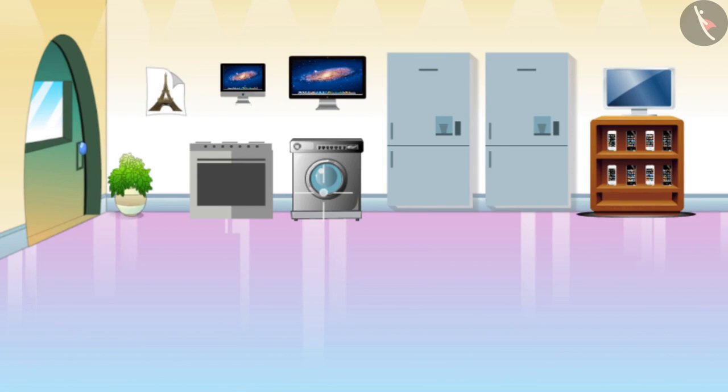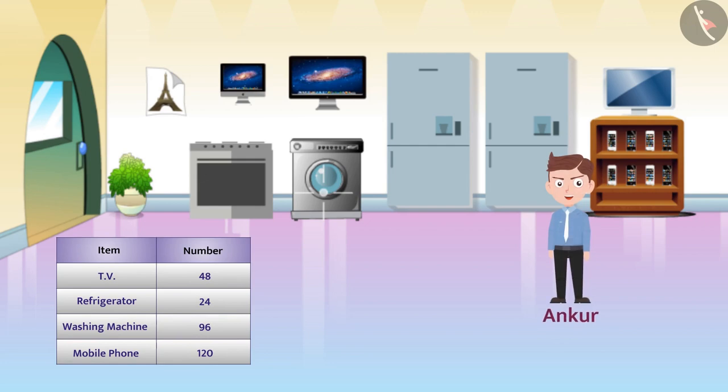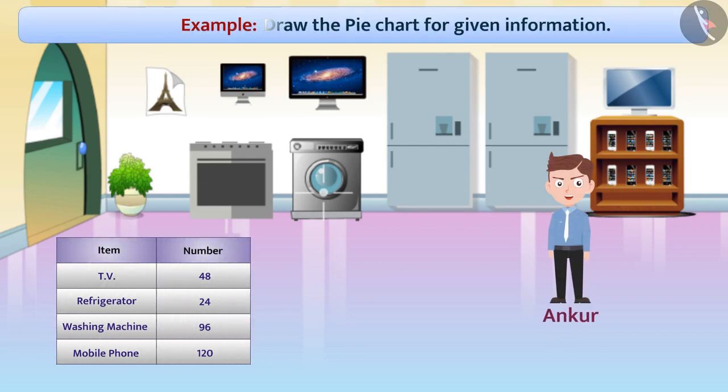Next example. The sale of various electronic items sold from Ankur's shop in a year is given below. Can you represent this information in a pie chart? Try it.